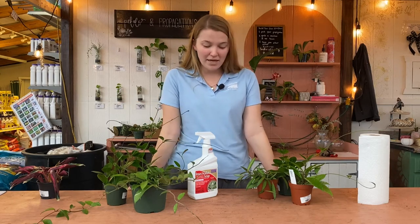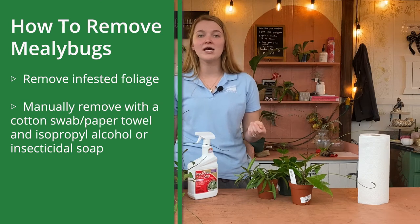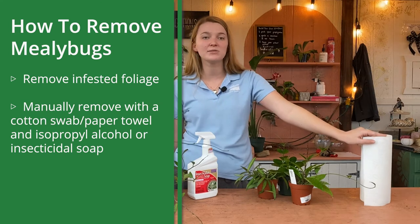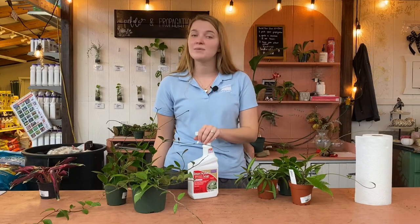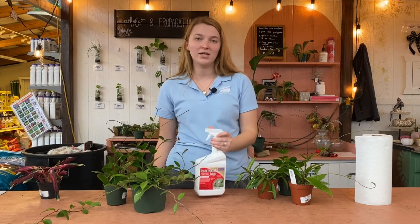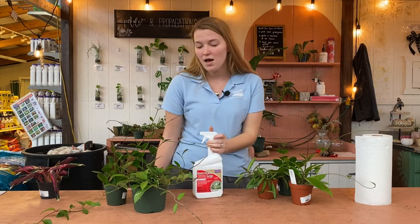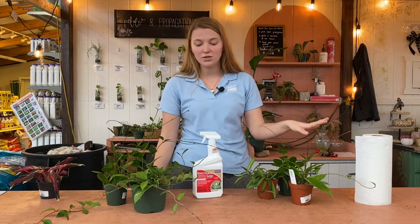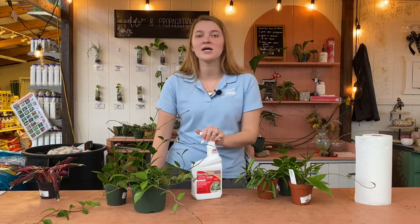It's best to manually remove them if you're not cutting the leaves off and you only have a few. What I mean by that is taking a cotton swab or a q-tip — we're going to use paper towels in today's demonstration — and soaking it in either rubbing alcohol or something like insecticidal soap, like we have here. We have the Bonide Brim, which you can find here at Martin's Home and Garden. Just soak your paper towel or cotton swab with this before wiping down the plant leaves and getting rid of those mealy bugs.